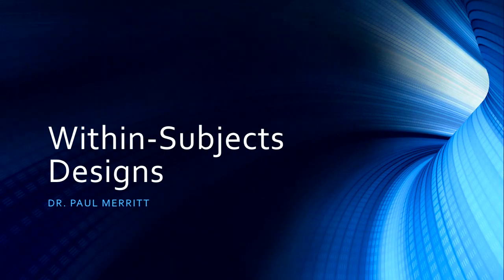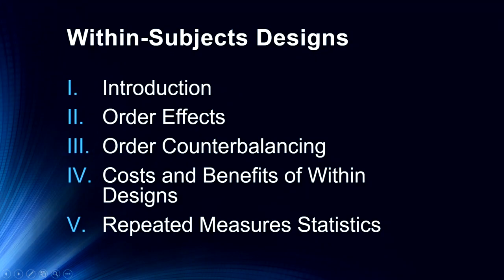In the previous two lectures we talked about experimental designs and compounds in experimental control. Today we'll specifically be talking about within-subjects designs. I'll first introduce exactly what they are, talk about order effects, order counterbalancing methods including block counterbalancing, Latin squares designs, all possible orders, and a summary of the costs and benefits. Finally, I want to briefly discuss what statistics we use in these repeated measures designs.